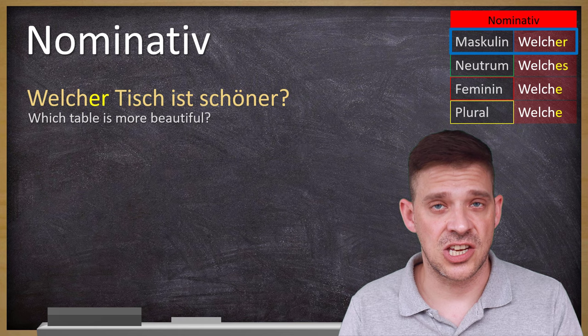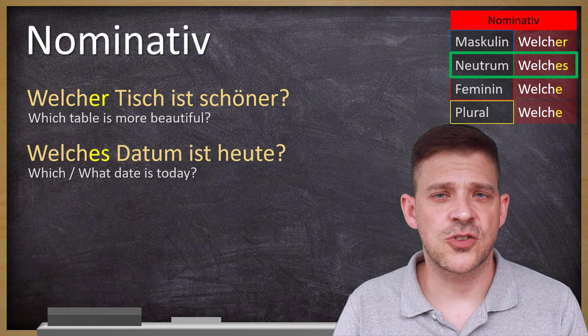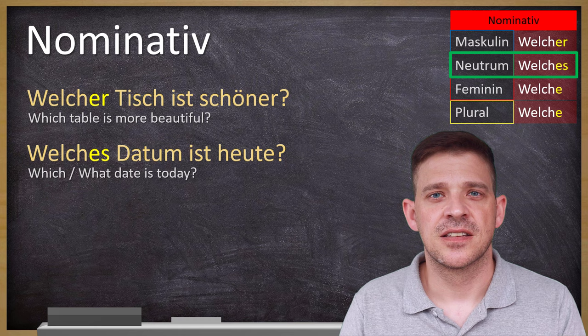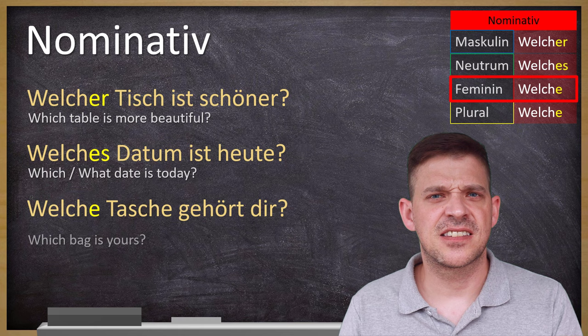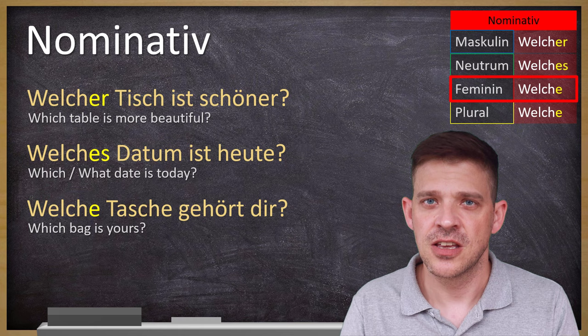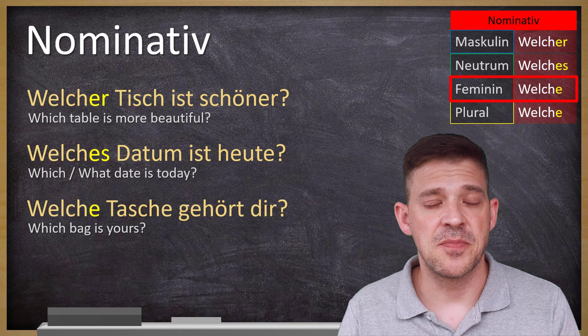Ein zweites Beispiel im Neutrum: Welches Datum ist heute? — Which or what date is today? Datum is also the subject and Datum is Neutrum, therefore the ending is -ES. Ein Beispiel im Feminin: Welche Tasche gehört dir? — If you have two bags and you're not sure which one is your friend's, you can ask: Welche Tasche gehört dir? Tasche ist Feminin, therefore Welche Tasche.